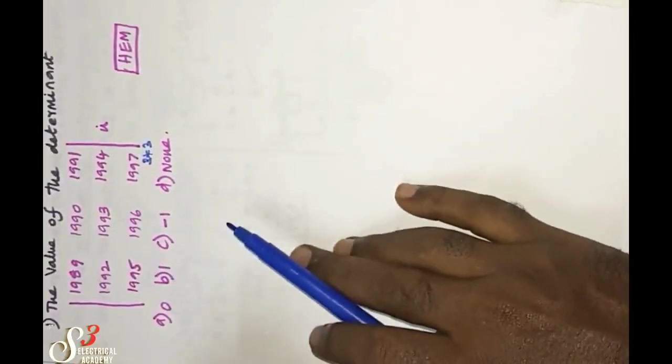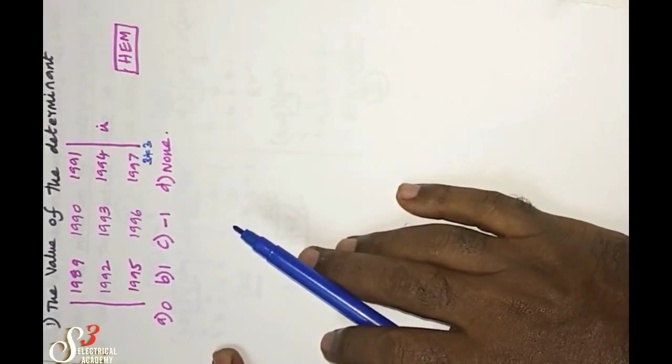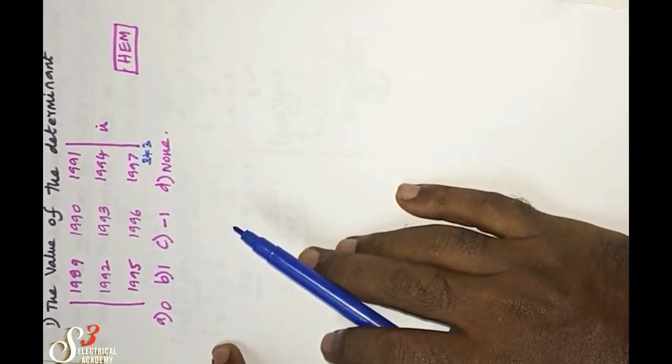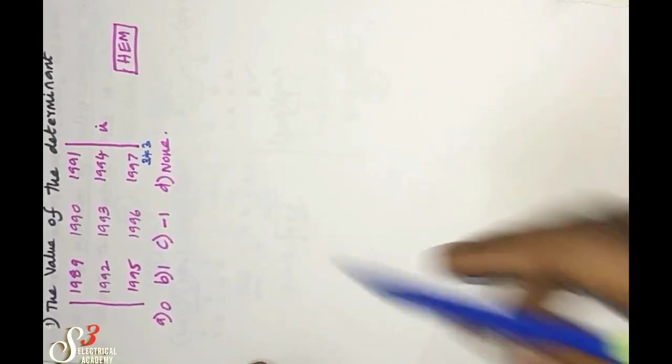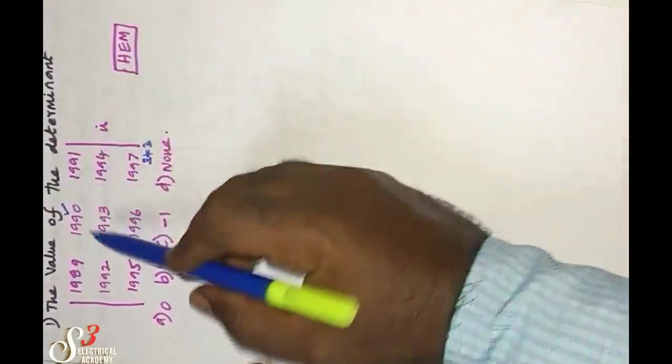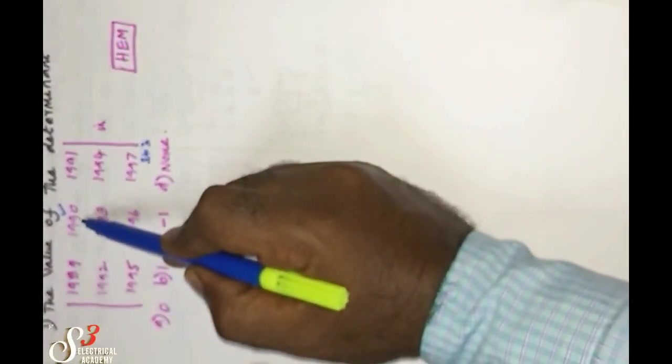This is a time-consuming approach, so we should incorporate row transformation, column transformation, row subtraction, or column subtraction. I am considering column number two. Column two differs from column one by just one.